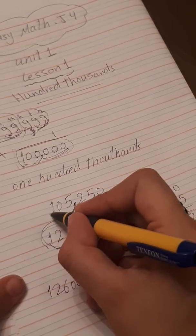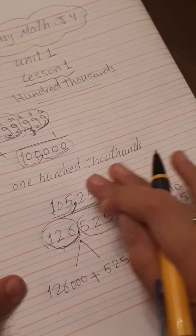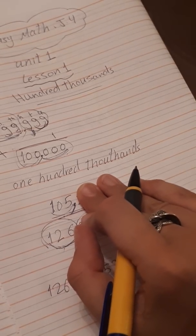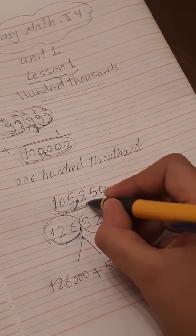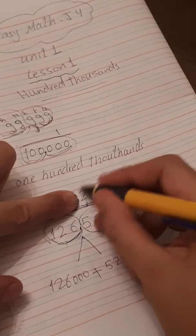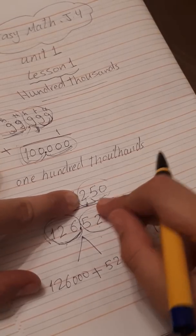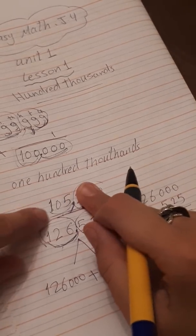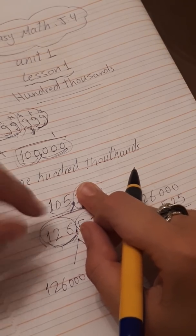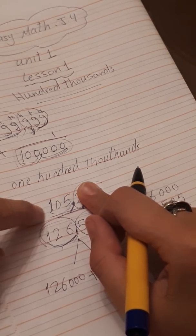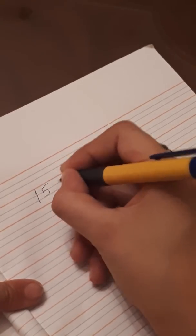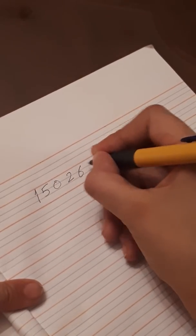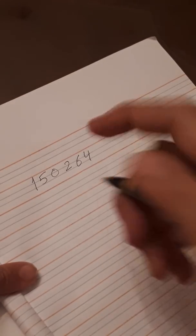Don't forget the word thousands. 105 thousands, 250. Then we will hide this and read it. It's so easy to read it - 250. And this is so easy to say 105, but don't forget to say thousands. It's 105 thousands and 250.